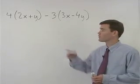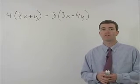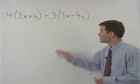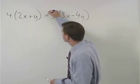To simplify the problem you see here, we're going to use both the distributive property and combining like terms. But before we do anything we need to change these minus signs to plus negatives.